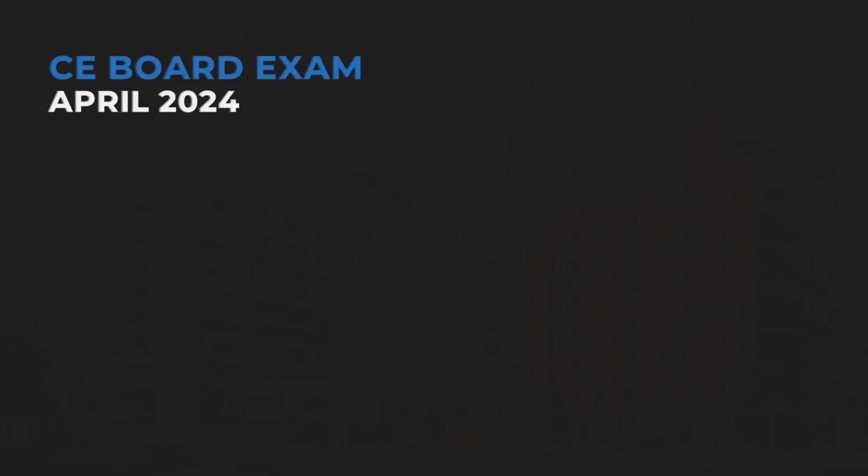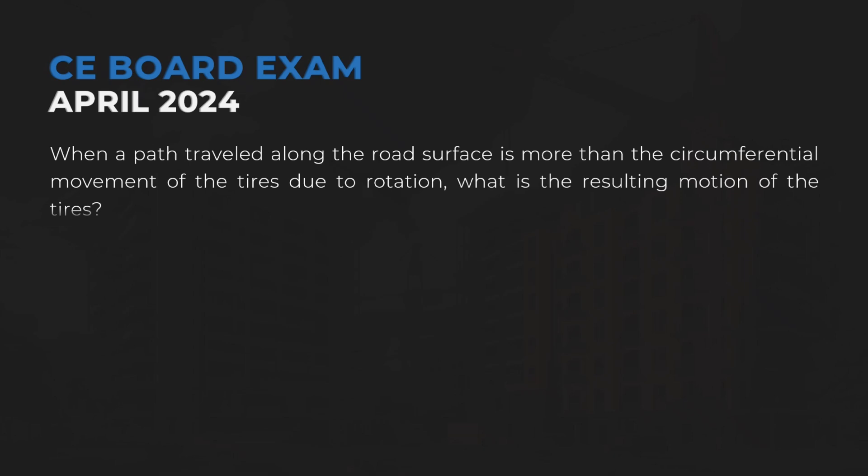When a path traveled along the road surface is more than the circumferential movement of the tires due to rotation, what is the resulting motion of the tires?